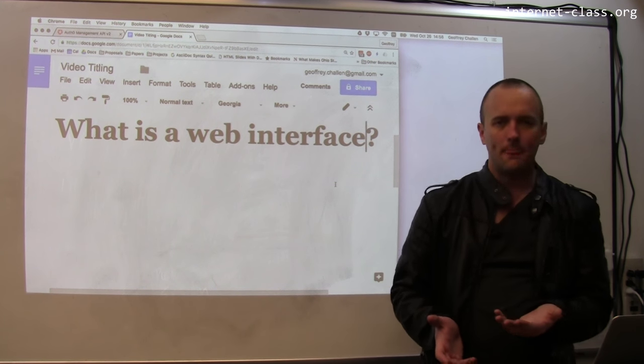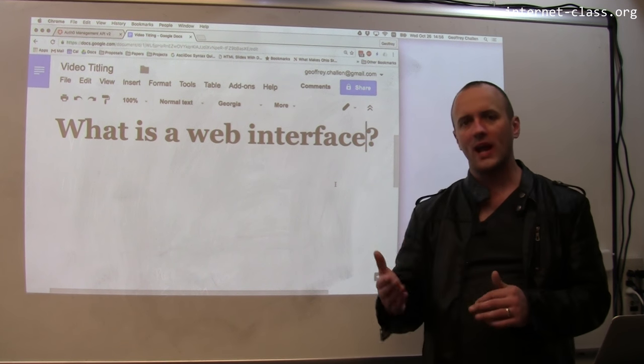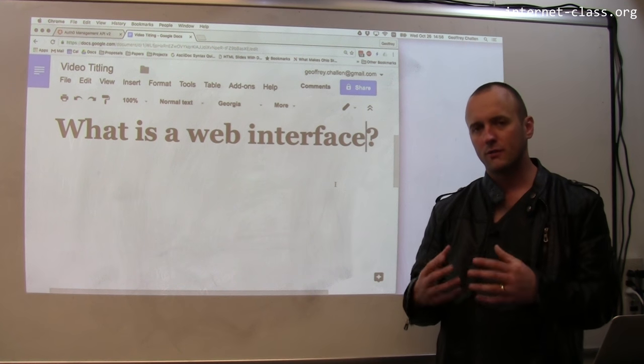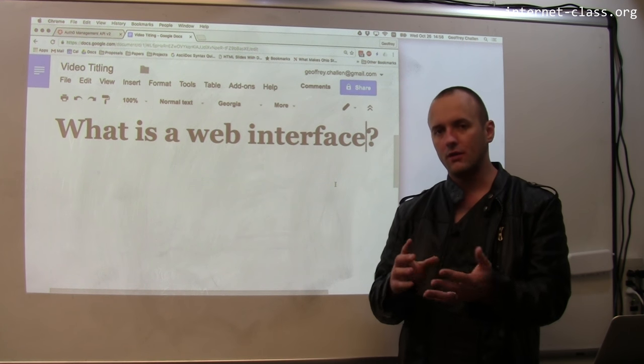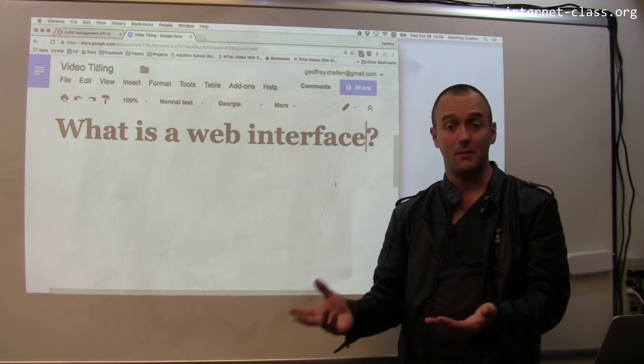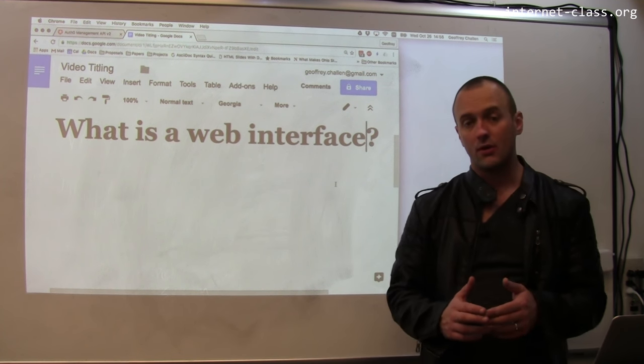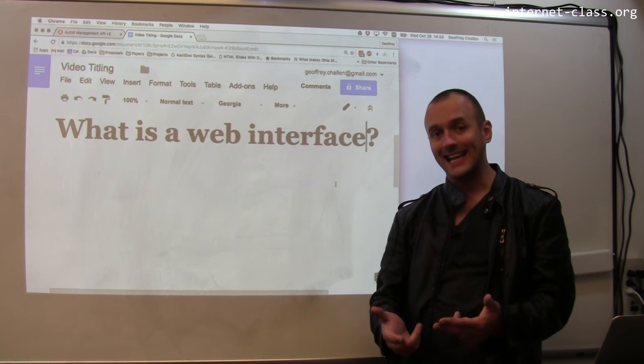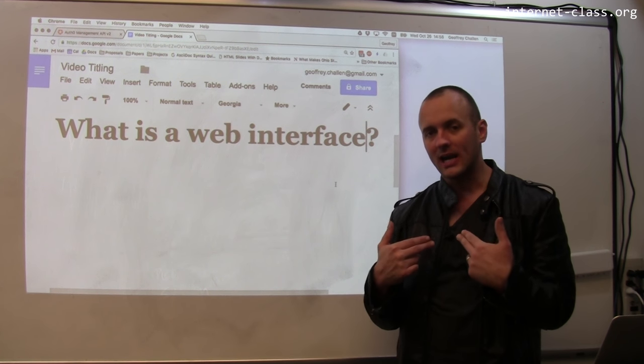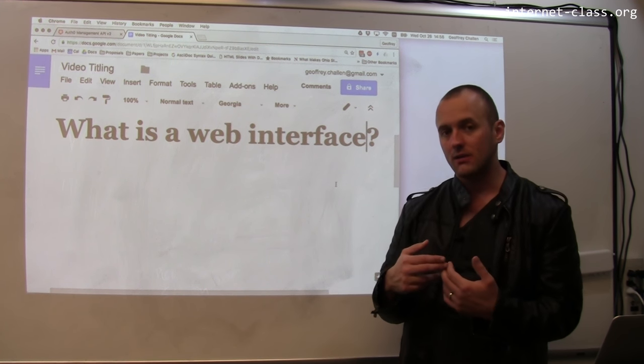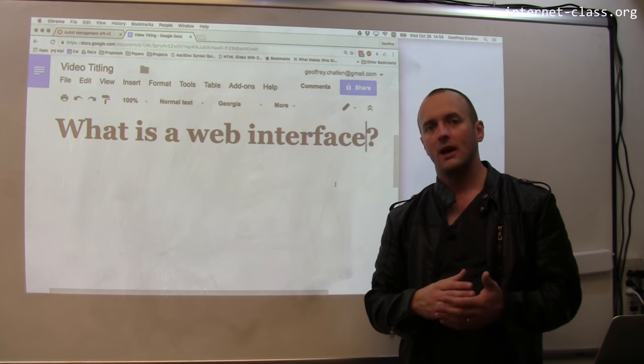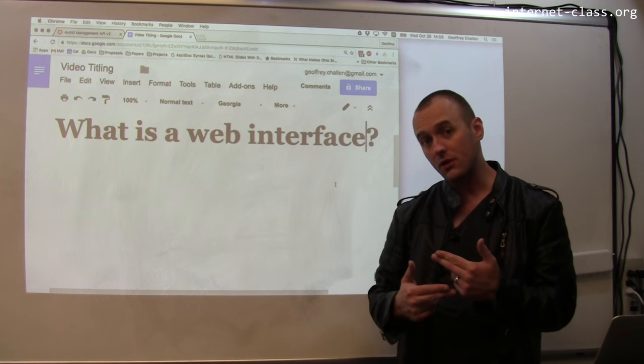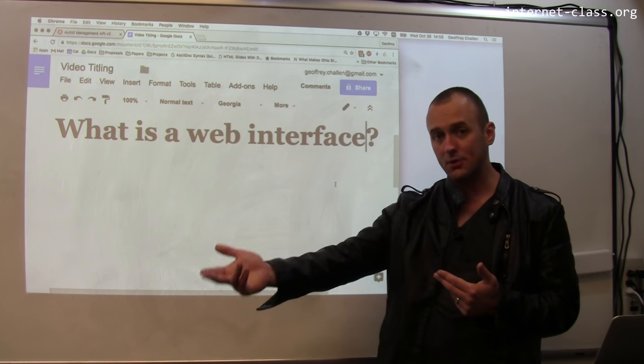So what is a web API? A web API or web interface is a way for a service to expose capabilities using URLs and using web commands. For example, rather than fetching a get that would return a web page, I can use a get to get a list of users. If I was using YouTube, I might be able to use a get to get a list of videos. And I can actually also use those interfaces frequently to accomplish things.